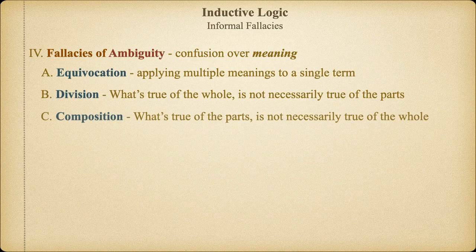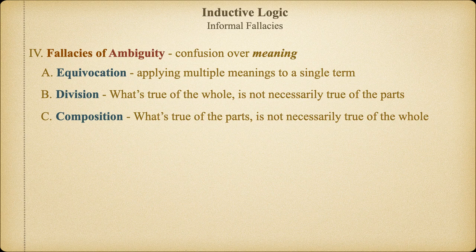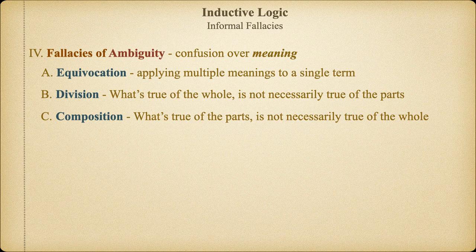The fallacies of composition and division are mirror opposites of one another and trade on confusing the properties of a complex entity with the properties of its parts and vice versa. An excellent team might be composed of individually mediocre players, because what makes a team excellent is more than merely the sum of its parts. Inversely, assembling the best players at every position doesn't necessarily mean the team as a whole will be excellent. Or consider that objects visible to the naked eye are composed of atoms: the fallacy of division would suppose that since the whole object is visible, all of its parts must also be visible to the naked eye. And it would be equally fallacious to assert that since we cannot see atoms, we cannot see objects composed of atoms. In both examples, we're confusing what's true of the compound with what must be true of its constituent parts.